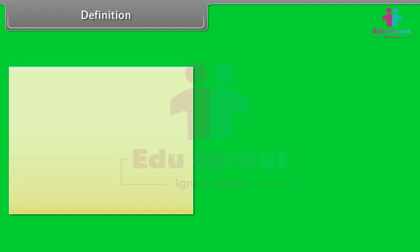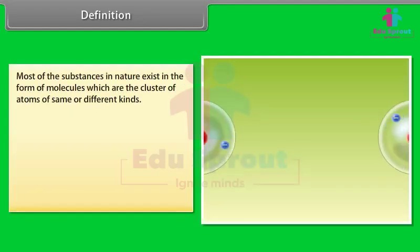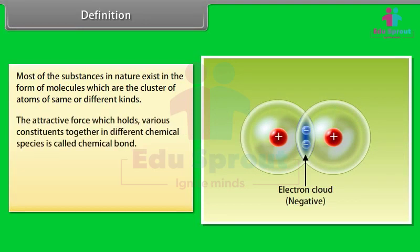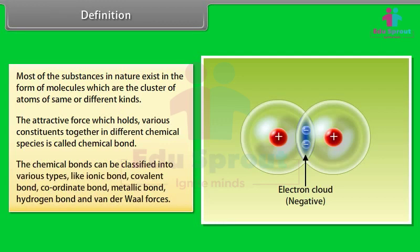Most of the substances in nature exist in the form of molecules, which are clusters of atoms of the same or different kinds. The attractive force which holds various constituents together in different chemical species is called a chemical bond. Chemical bonds can be classified into various types: ionic bond, covalent bond, coordinate bond, metallic bond, hydrogen bond, and Van der Waals forces.